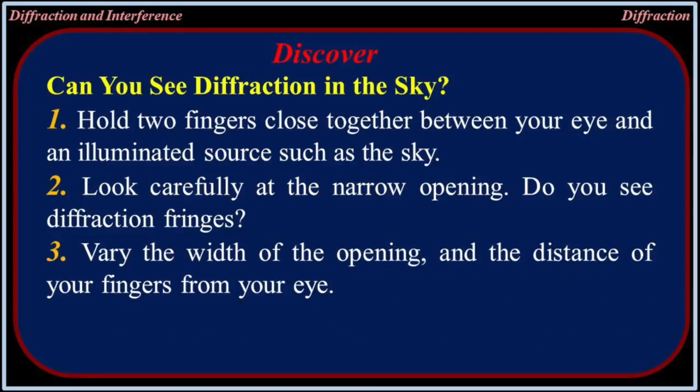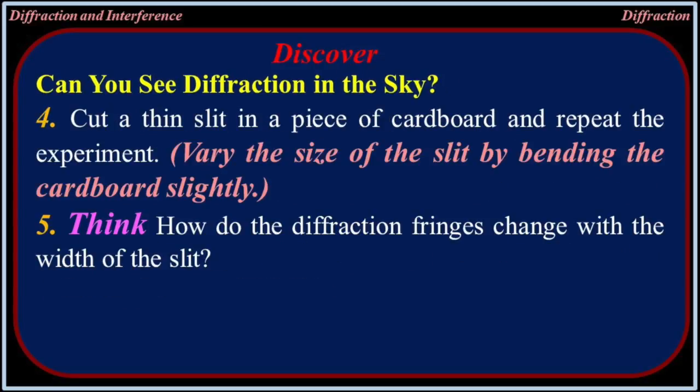Can you see diffraction in the sky? Hold two fingers close together between your eye and an illuminated source, such as the sky. Look carefully at the narrow opening — do you see diffraction fringes? Vary the width of the opening and the distance of your fingers from your eye. Cut a thin slit in a piece of cardboard and repeat the experiment. Vary the size of the slit by bending the cardboard slightly. How do the diffraction fringes change with the width of the slit?